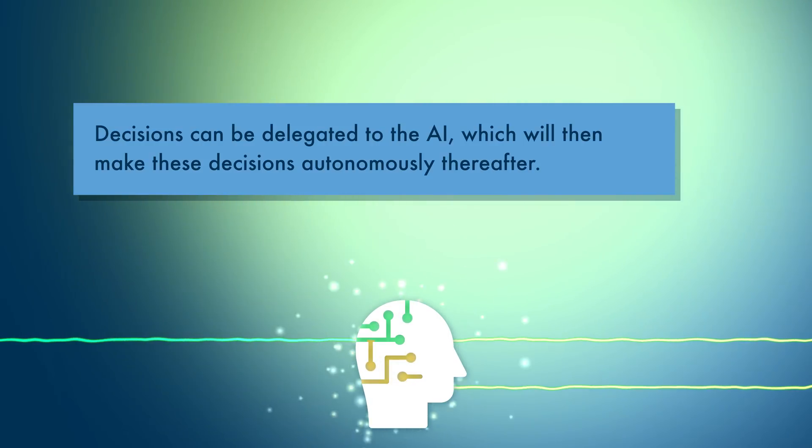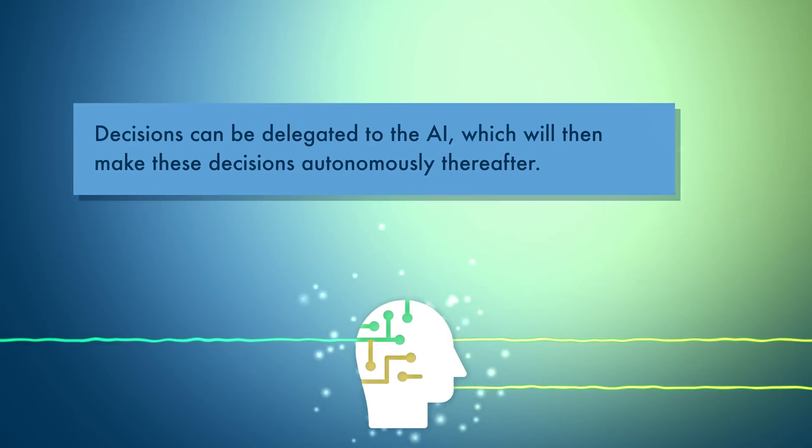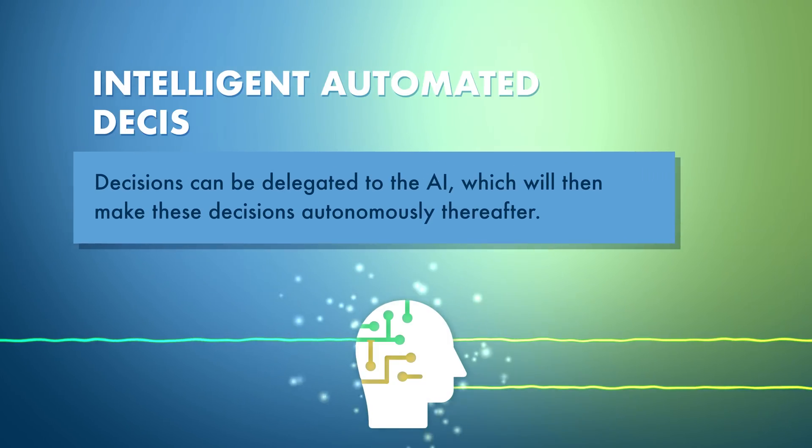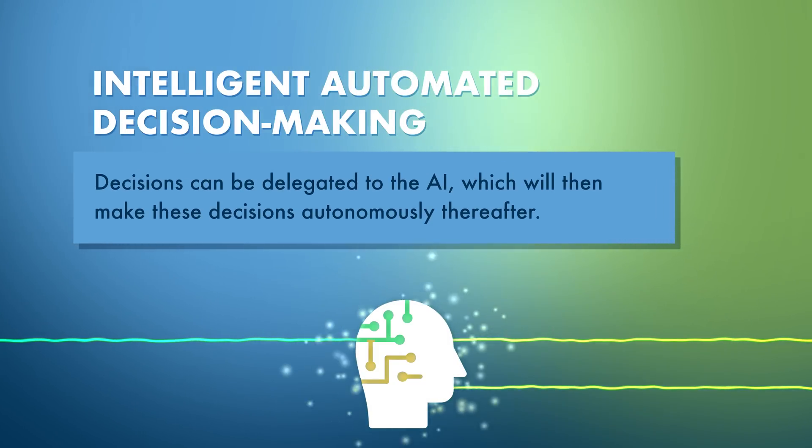In other words, we can delegate some decisions to the AI, and the AI will make those decisions autonomously thereafter. This is called intelligent automated decision-making. So why would we want to do this? There are a few very good reasons.